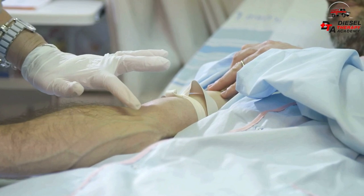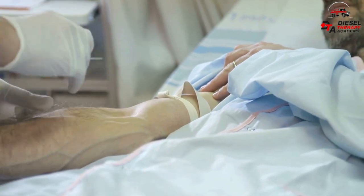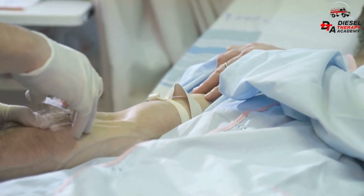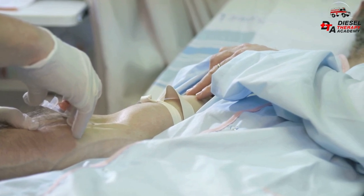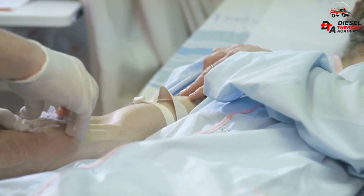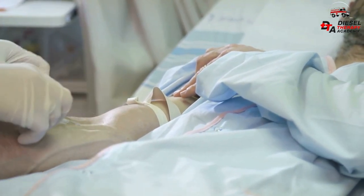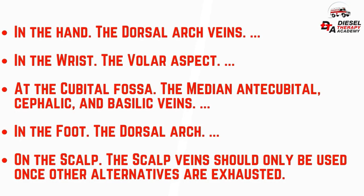Step 2: Examine the individual's veins in the selected area to ensure they have a suitable vein for insertion. The preferred sites for IV cannulation include: in the hand, the dorsal arch veins; in the wrist, the volar aspect; at the antecubital fossa, the median antecubital, cephalic, and basilic veins; in the foot, the dorsal arch; and on the scalp — scalp veins should only be used once other alternatives are exhausted.